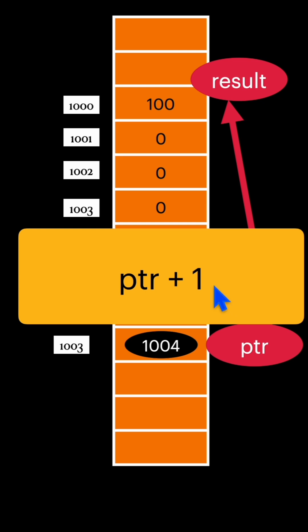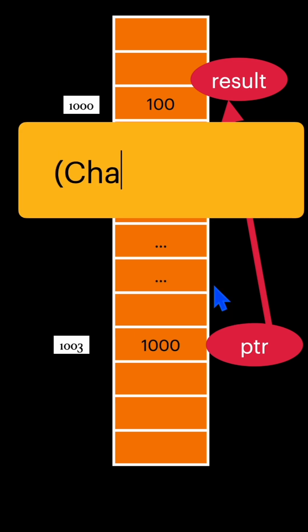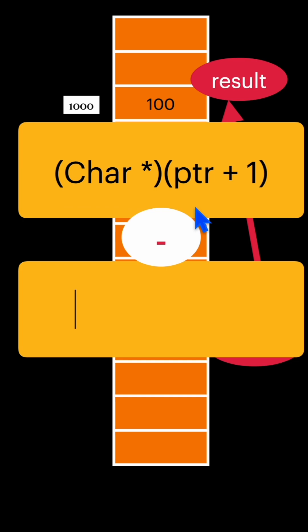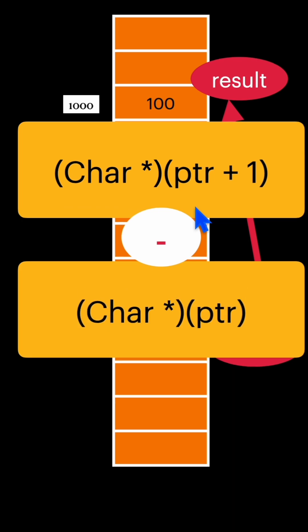So you have to convert it into the character pointer. You can write it like this: ptr plus 1, and you convert it into character pointer. So this is your next pointer, right, and you subtract it with the current pointer ptr.